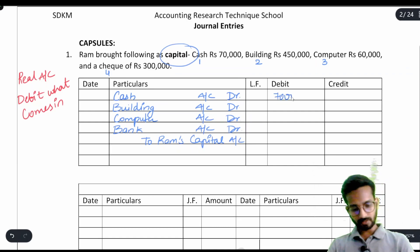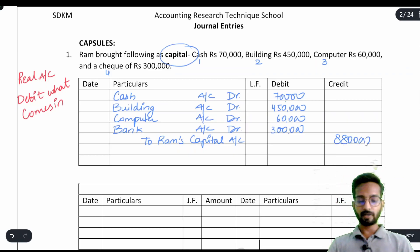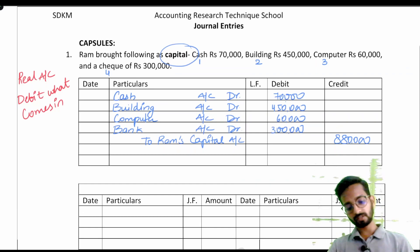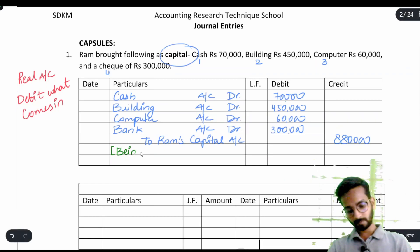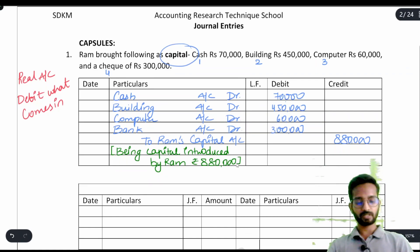The amounts are: cash ₹70,000, building ₹4,50,000, computer ₹60,000, and bank ₹3,00,000, giving a total of ₹8,80,000. Remember, the debit side should always match the credit side — if it is not matching, you have done something wrong. You also have to write the narration: 'Being capital introduced by Ram — ₹8,80,000.' Always mention 'being' before writing the narration.